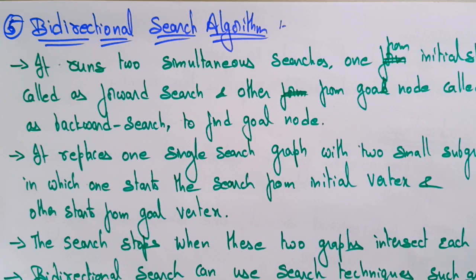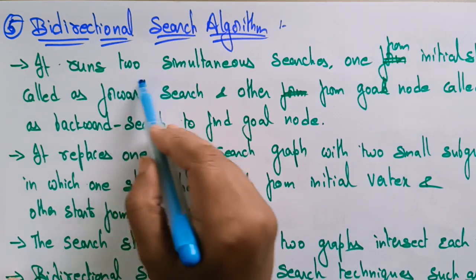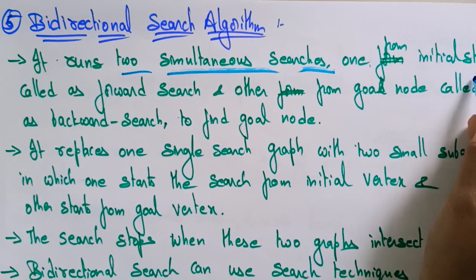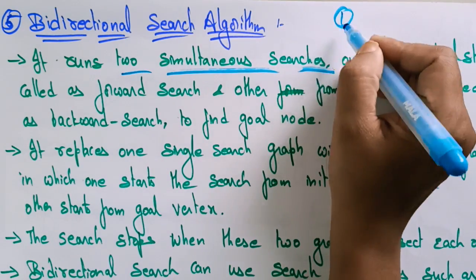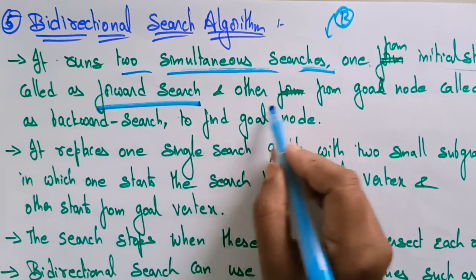Welcome back students. Let's continue with uninformed search algorithms in artificial intelligence. The last one in this series is the bidirectional search algorithm. Bidirectional means we are doing the searching in two ways — it runs two simultaneous searches: one from the initial state, called the forward search, starting from the root node.